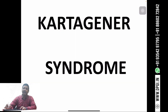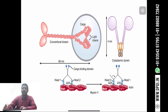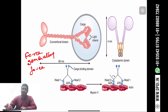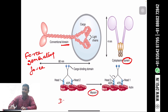To understand the Kartagener syndrome, first you have to have knowledge about the molecular motors. Molecular motors are basically the force generating proteins. They generate force and by this they help in the movement in the cell. These molecular motors are mainly kinesin, dynein, myosin, and dynamin.